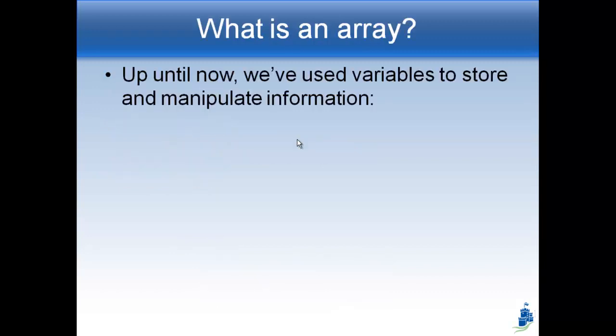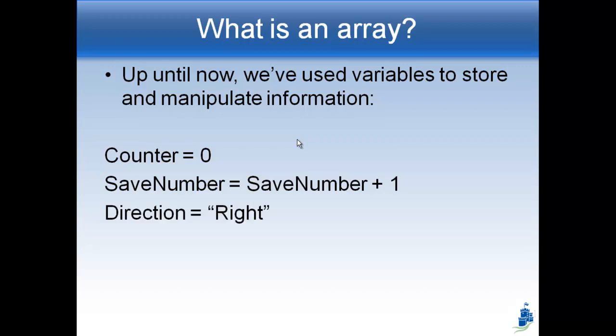So an array is kind of like a variable. Up until now, we've been using these variables to store and manipulate information. Right? So for example, let's say you have some variable called counter. You can say counter equals 0. Right? And that means that the number 0 is now stored in counter. That's old news, right? Or for example, if you have some variable called save number, you can say that save number is equal to itself plus 1. And that makes it go up by 1. Of course, we can have variables that are strings and they can store text.